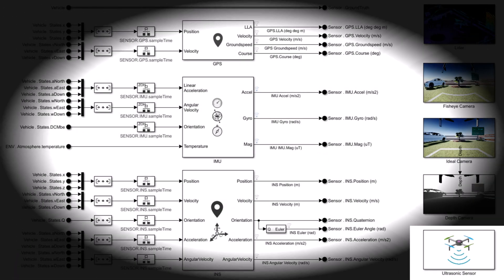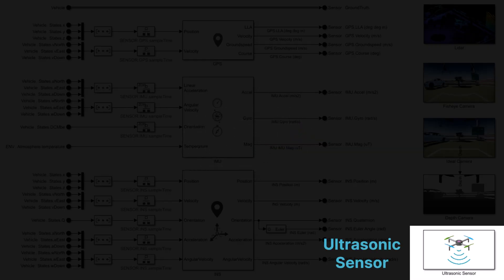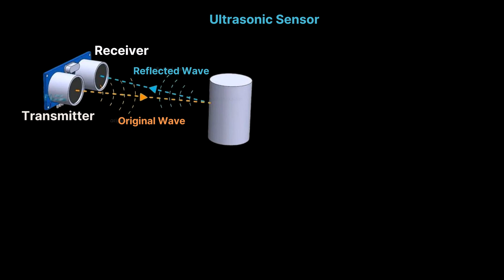Last but not least, let's explore the ultrasonic sensor. An ultrasonic sensor measures distance by emitting high-frequency sound waves, and then detecting the time it takes for the sound waves to bounce back after hitting an object. This process is known as echolocation. The sensor has a transmitter that emits the sound waves and a receiver that captures the reflected waves.